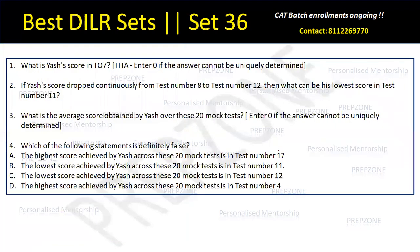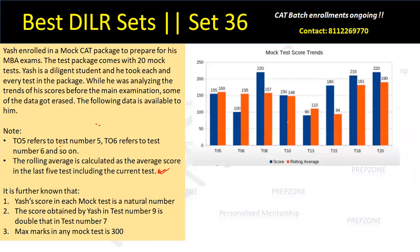What is rolling average? Rolling average is calculated as the average score in the last 5 tests including the current test, which means the last 5 tests' average is 160. Test number 1, 2, 3, 4, 5's average is given as 160. It is further known that maximum marks in any mock test is 300, and the score obtained by Yash in test number 9 is double that in test number 7.